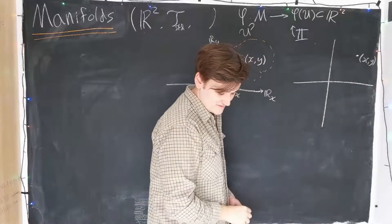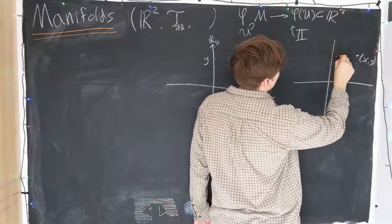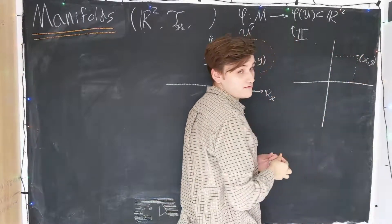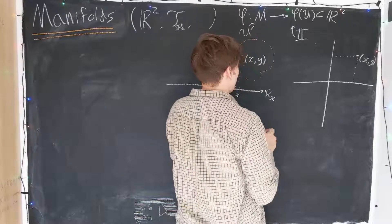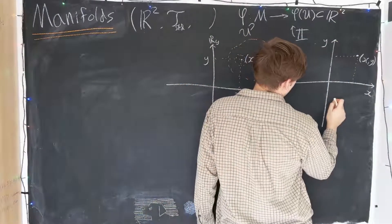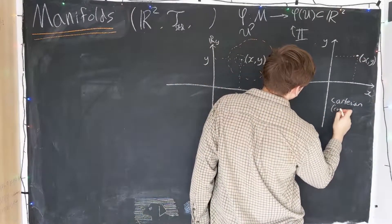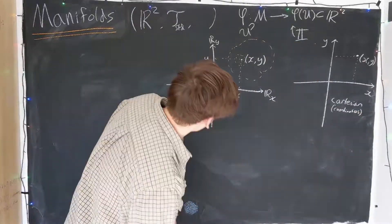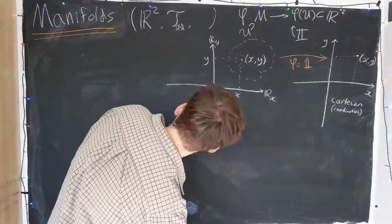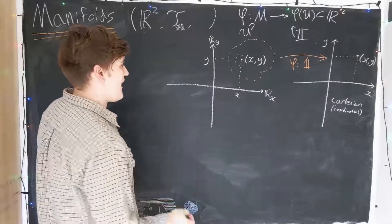Essentially we map each point into each point. Seems rather trivial and stupid to do that, but it is a valid, now if you like, coordinatization of this space. So this is frequently called Cartesian space, or Cartesian coordinates. Okay, so that's a pretty trivial coordinate map of this space.